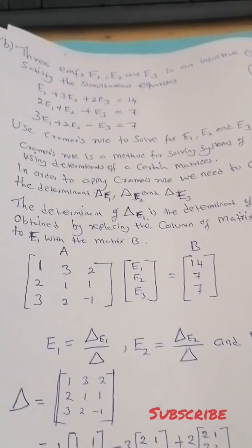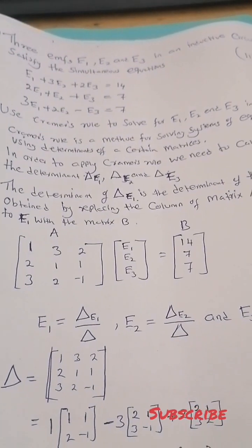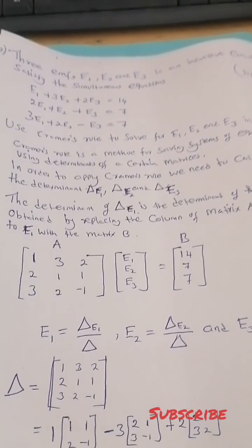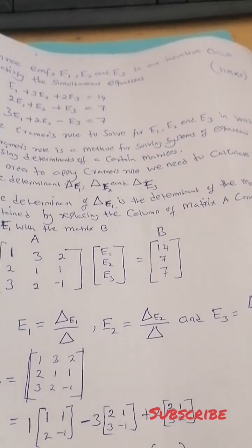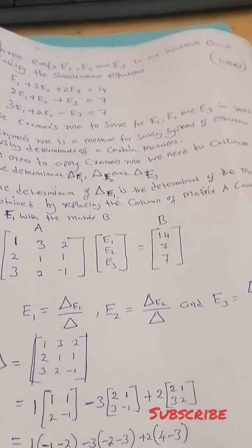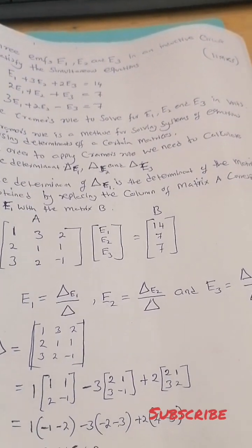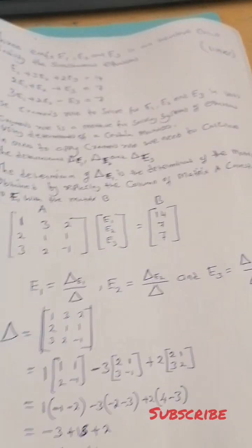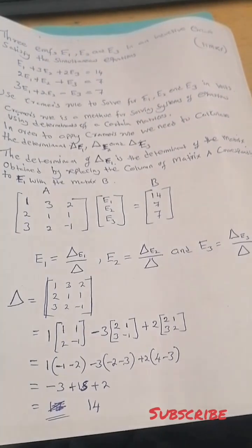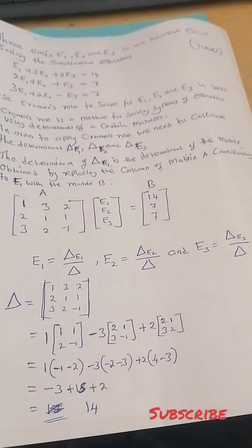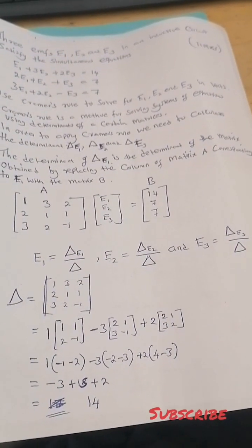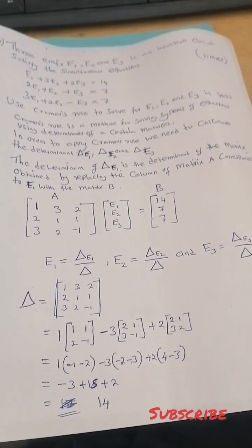Using Cramer's rule method, this is the method in which we use determinants to solve the matrix equation. In order to apply Cramer's rule, we need to calculate the determinant of the coefficient matrix of E1, E2, and E3.